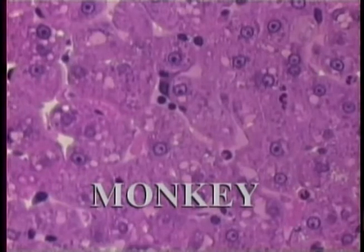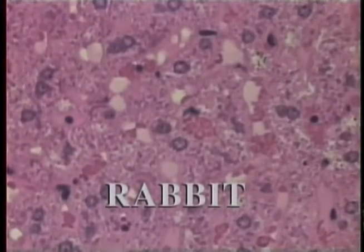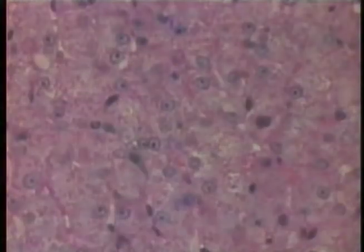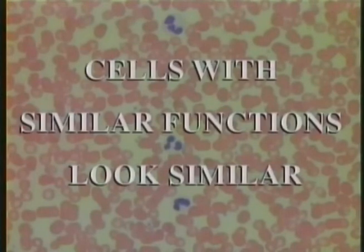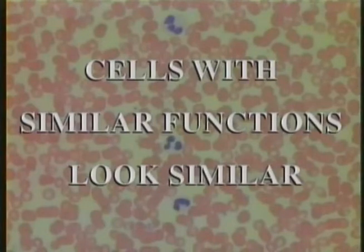The liver cells of animals are also similar. This pattern of similarity is evident in every cell group, including red blood cells, bone cells, and many others. The cell groups of multicellular organisms are similar because they have the same functions. Whether they belong to rabbits, humans, or birds, red blood cells perform the same task — they transport oxygen throughout the body.